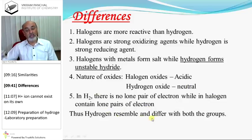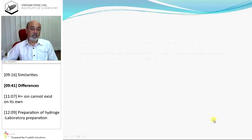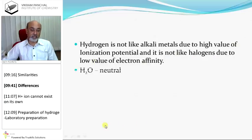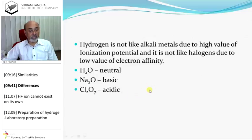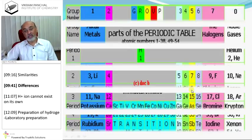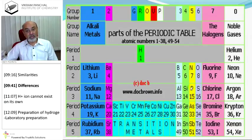Hydrogen resembles as well as differs from both groups. Hydrogen is not like alkali metals due to its high value of ionization potential. And it is not like halogens due to its low value of electron affinity. H2 is neutral, Na2 is basic, Cl2 is acidic. So its position is not fixed and it is known as a rogue element. Therefore, the best choice is that hydrogen should be kept separately from all other groups.